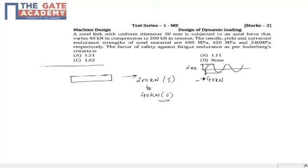The mean load, whenever you have these kind of loadings where this is p1 and this is p2, will be p1 plus p2 by 2, which is 200 minus 40 by 2, which is 160 by 2, which equals 80 kilonewton.